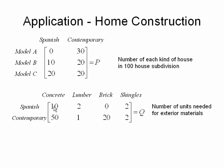If I look at the first row first column, it says 10, so that means 10 units are required of concrete for the Spanish style. If I go to the second row third column and see that entry of 20, that means 20 units of brick are required for the exterior materials on the contemporary style.